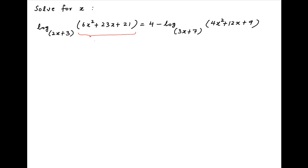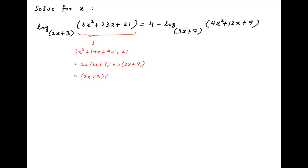On the left hand side, 6x squared plus 23x plus 21 can be written as 6x squared plus 14x plus 9x plus 21, which is equal to 2x times (3x plus 7) plus 3 times (3x plus 7), which is equal to (2x plus 3)(3x plus 7).